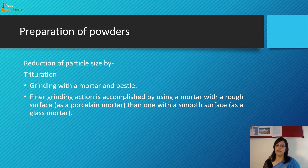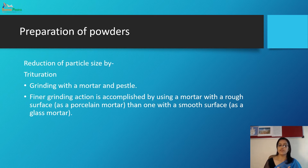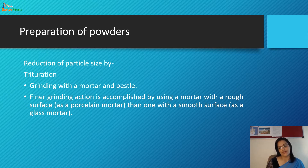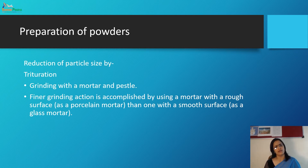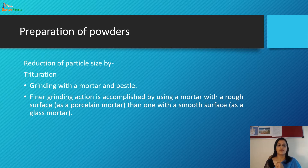The very first step — reduction of particle size — is very important. What are the methods of reduction of particle size, that is, micronization of the powder? The first method is trituration. This is a very old and commonly adopted method. On a small scale, the pharmacist reduces the size of a chemical substance by simply grinding in a mortar and pestle.